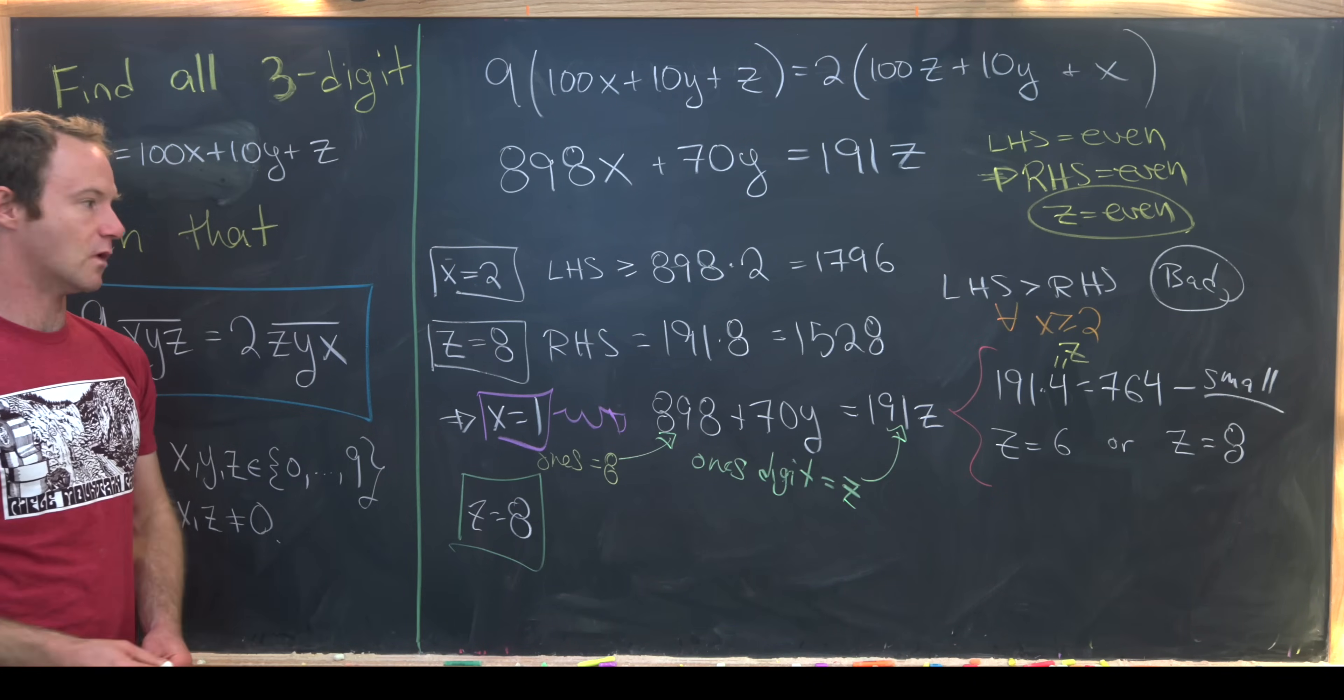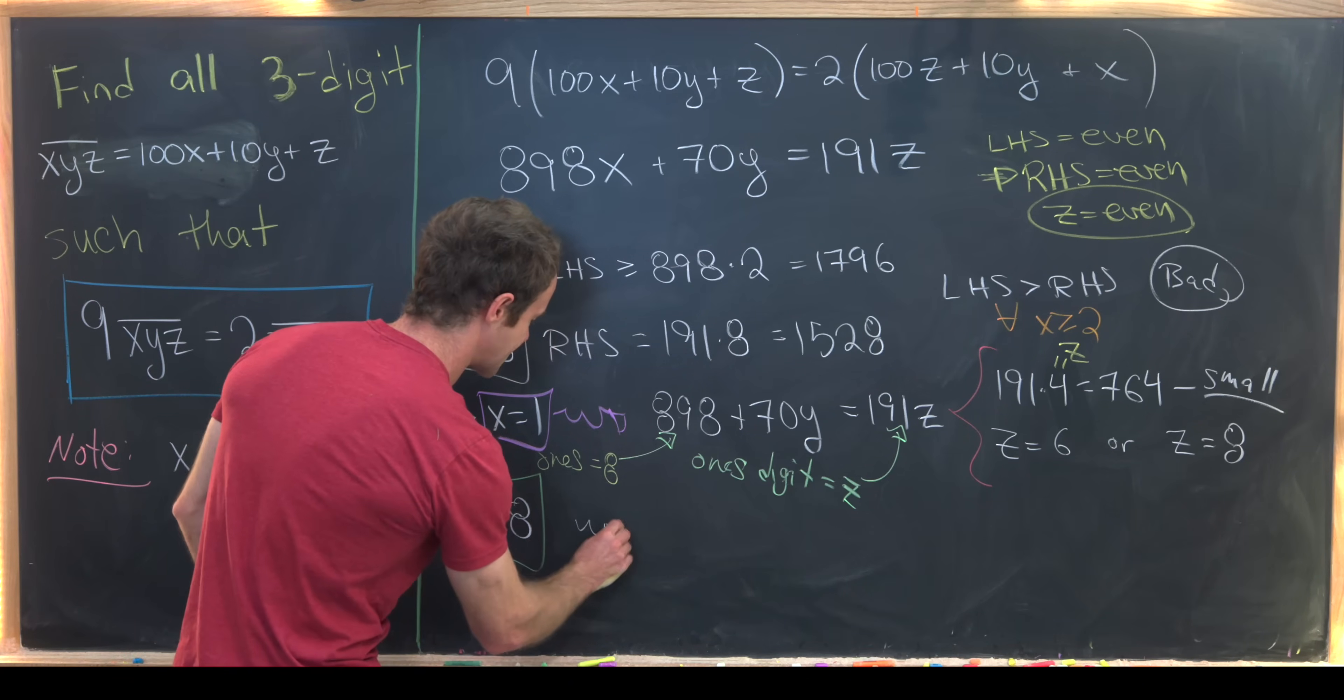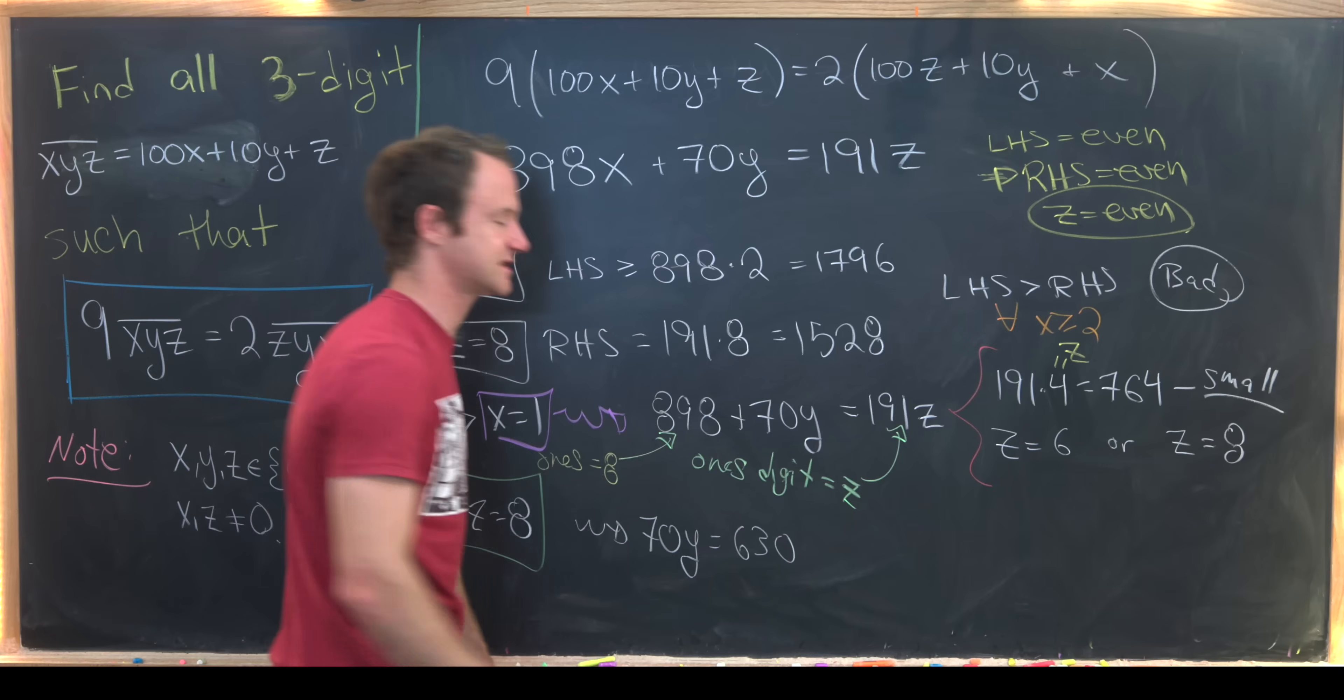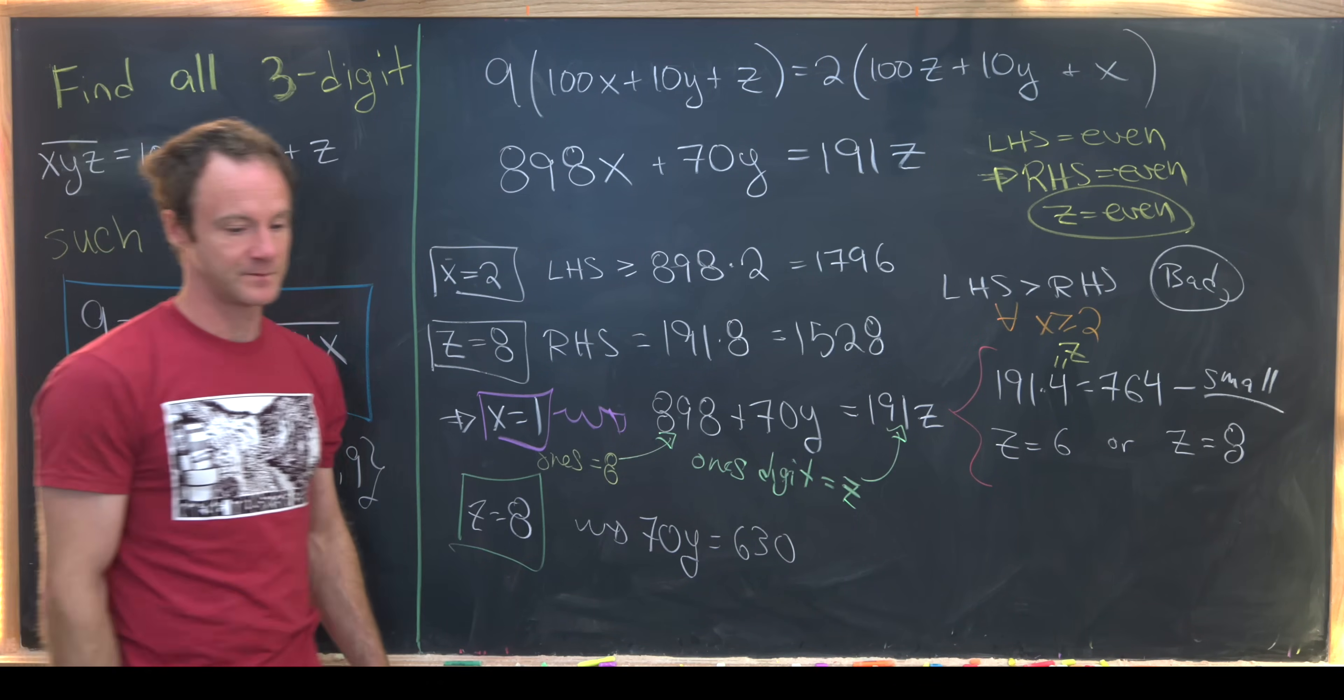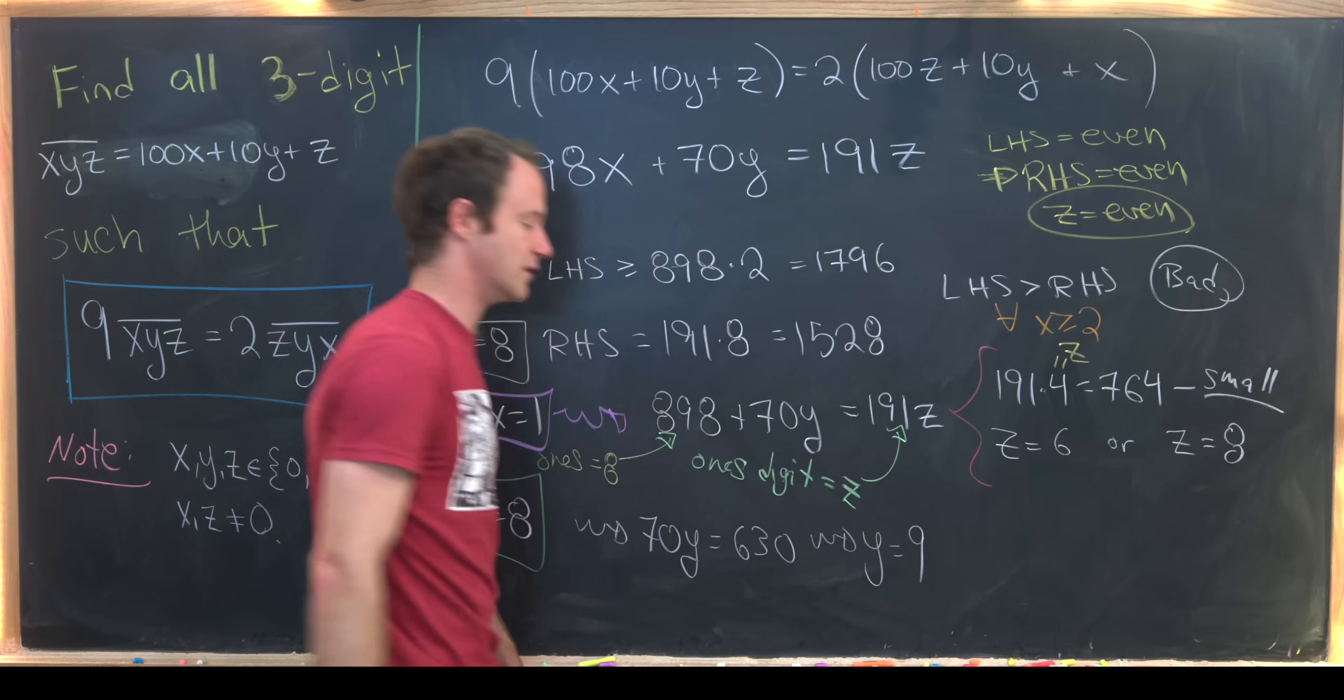So now we've got x is equal to 1, z is equal to 8. And that is going to collapse our equation to 70 times y is equal to 630. Again that's just plugging these values up here. That's pretty easy to do. But notice that that gives us that y must be equal to 9.